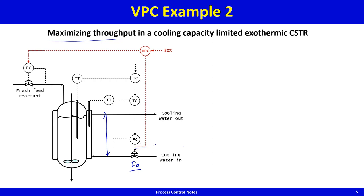You look at the valve position — if it's only 50% open, you increase the fresh feed flow. Is this valve positioning controller reverse-acting or direct-acting? If the valve position is going above 80%, you increase the feed set point, so this is a direct-acting controller.